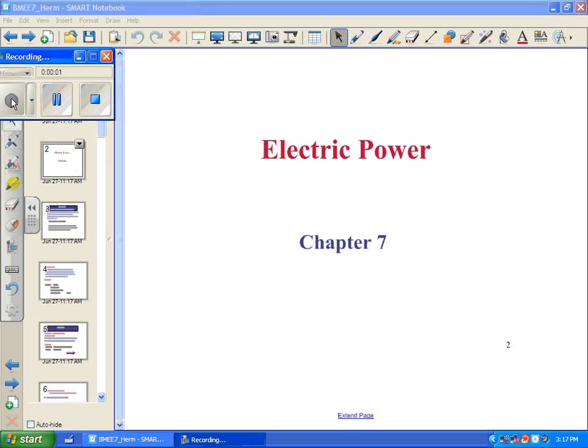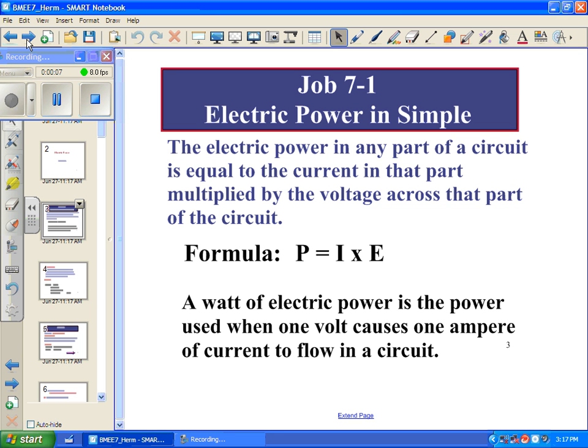We're going to talk about power. This is chapter 7 of Singer, I believe. Electric power is simple. Any part of a circuit is equal to the current in that part multiplied by the voltage in that part. Nice and easy. P is equal to IE, anywhere, everywhere, anywhere you want to look. And it all adds up, as long as you're talking about true power. So it's pretty simple.